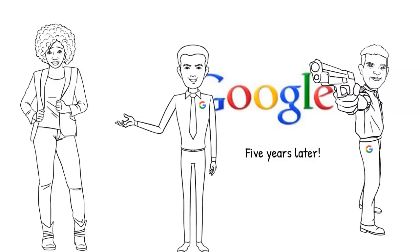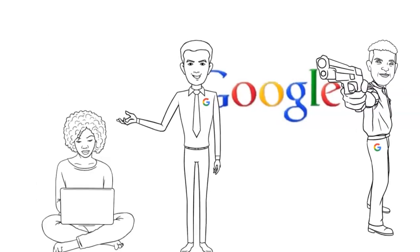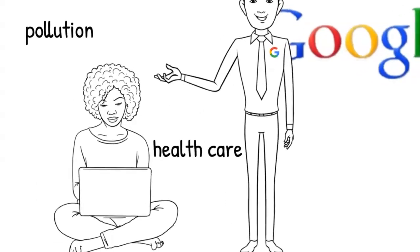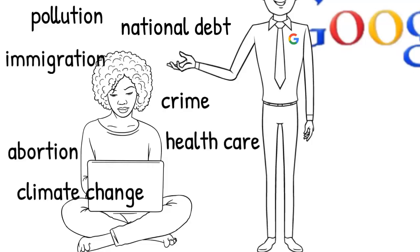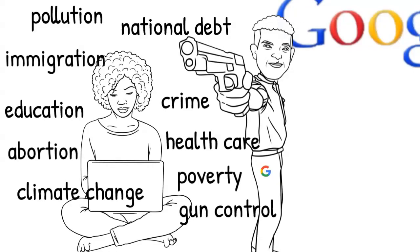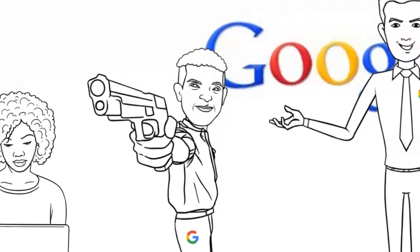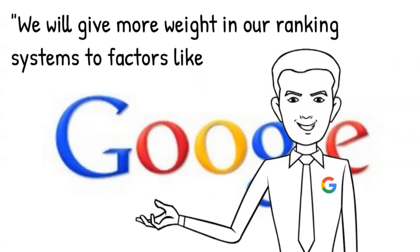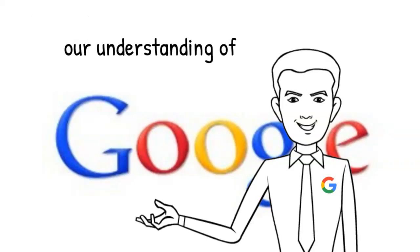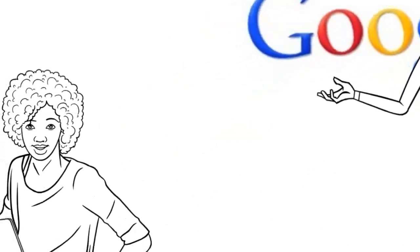In the words of Google, this program covers any issue that could potentially impact the future happiness, health, financial stability, or safety of our users. For such searches, Google wrote that we will give more weight in our ranking systems to factors like our understanding of the authoritativeness, expertise, or trustworthiness of the pages we present in response.